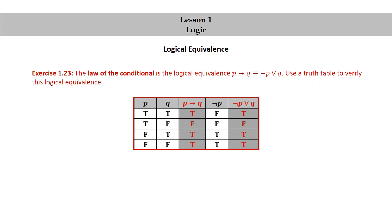The not p column we get from the truth table of negation — we just take the opposite truth value to each truth value in the p column: true becomes false, true becomes false, false becomes true, and false becomes true. And finally, the last column, not p or q, we use the columns corresponding to not p and to q and the truth table for the disjunction: false or true is true, false or false is false, true or true is true, true or false is true. Notice that the columns corresponding to p implies q and not p or q have exactly the same truth values. This verifies the given logical equivalence.